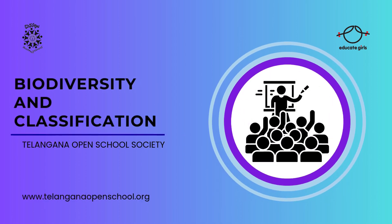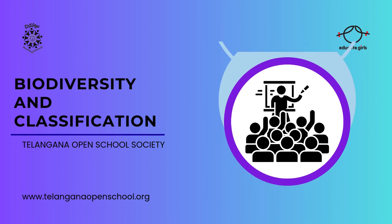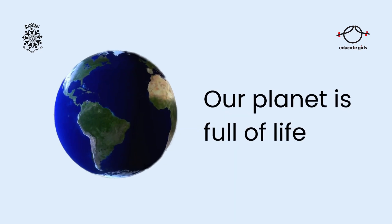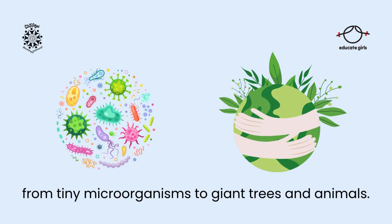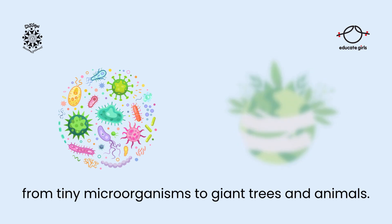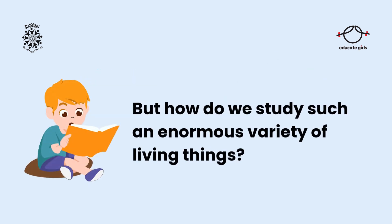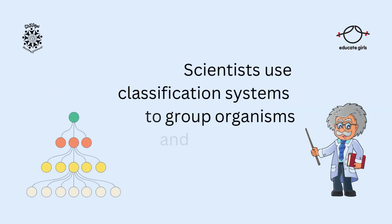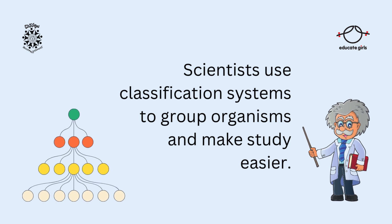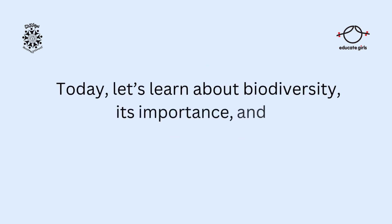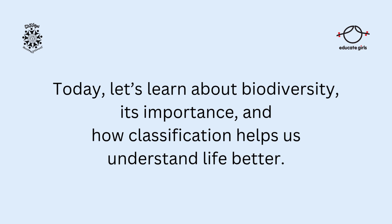Biodiversity and Classification. Our planet is full of life, from tiny microorganisms to giant trees and animals. But how do we study such an enormous variety of living things? Scientists use classification systems to group organisms and make study easier. Today, let's learn about biodiversity, its importance, and how classification helps us understand life better.